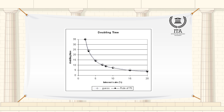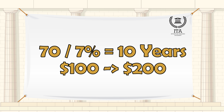An asset grows exponentially when its increase is proportional to what is already there. A common example is compound interest, where $100 invested at 7% per year annual compound interest will double in 10 years.